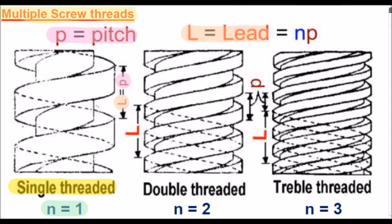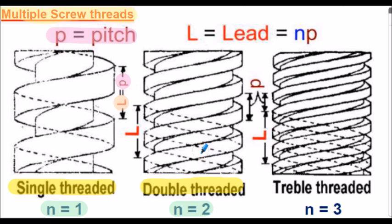If we consider a double threaded screw, the number of starts n is equal to 2. We find that for one revolution of the screw thread, the lead is twice the pitch, given by the formula: lead equals the number of starts multiplied by the pitch of the thread. And for a treble threaded or 3-start screw, n equals 3, so the lead — the linear movement for one revolution — is 3 times the pitch.